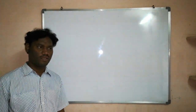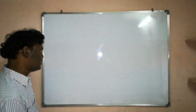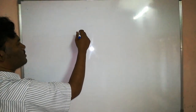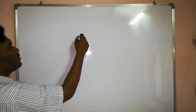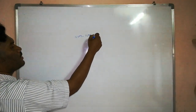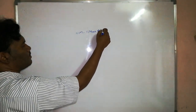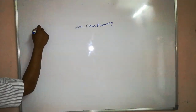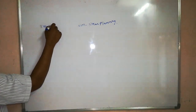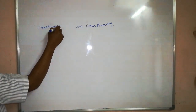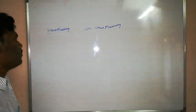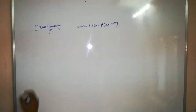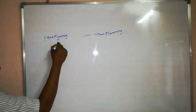Hi guys, this is Ganesh. Just now I was explaining about the goal-type planning and the Blocks World problem. Now I am going to explain non-linear planning. In the case of linear planning, we are arranging the steps in sequential order and implementing with one algorithm. That algorithm is referred to as the STRIPS algorithm.